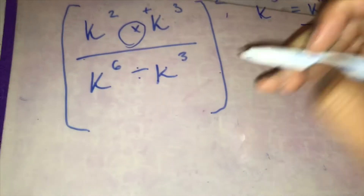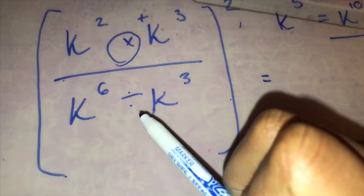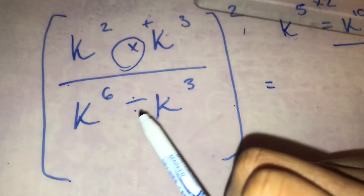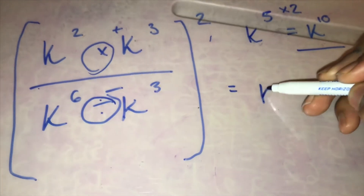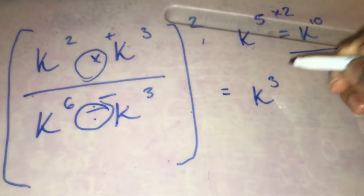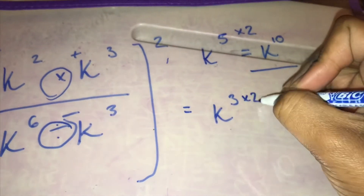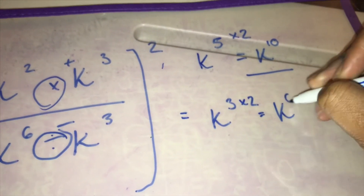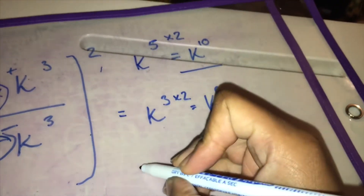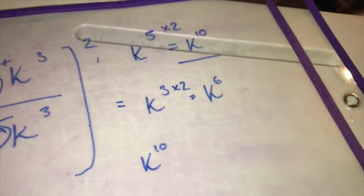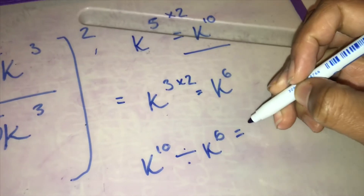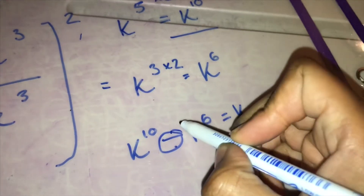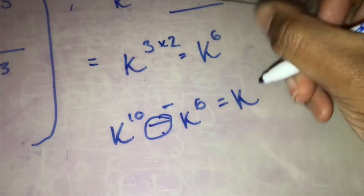On the bottom, we've got k to the power of six divided by k to the power of three. Because this is a division, we take away the powers — six take away three is three — then to the power of two, so that equals k to the power of six. The division now is k to the power of ten divided by k to the power of six. We're dividing, so we minus the powers — ten minus six is four — so the answer is k to the power of four.